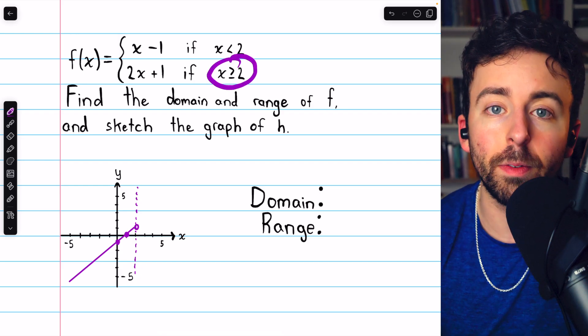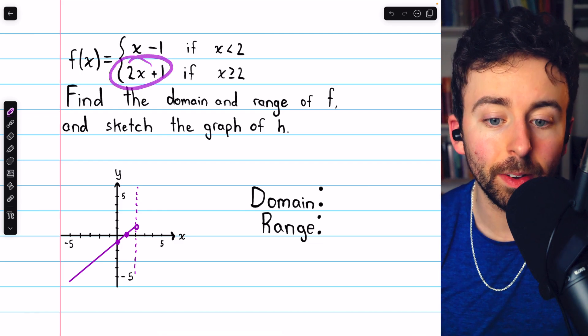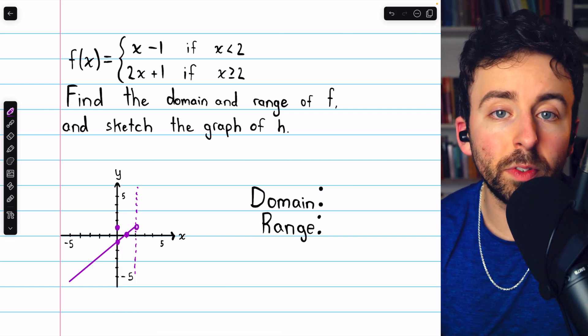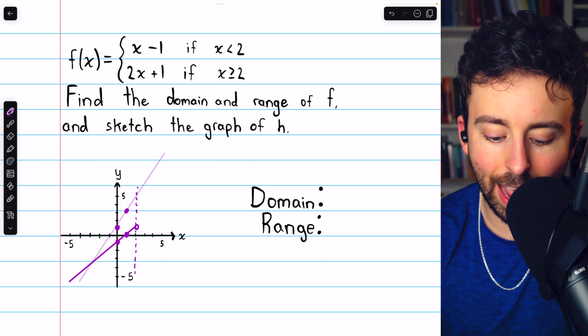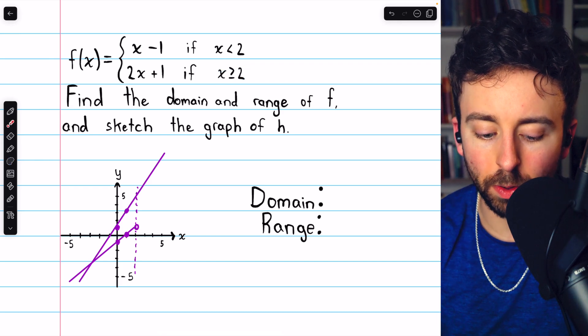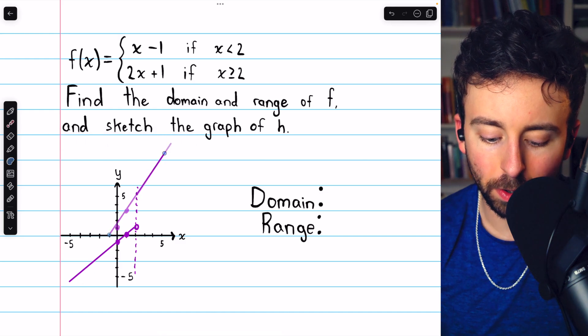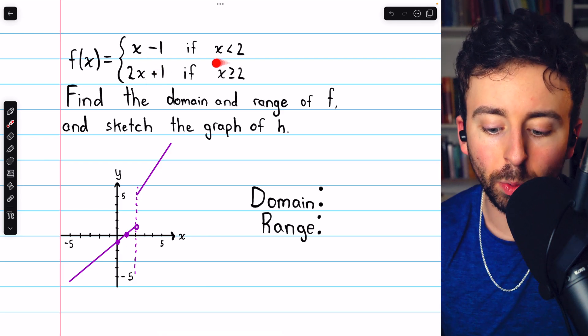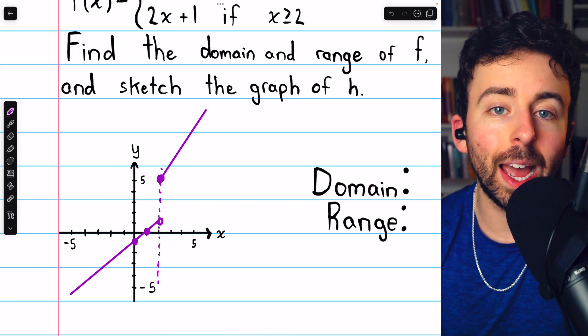Once we get to x equals 2 and past it, so x greater than or equal to 2, this is what the function looks like. 2x plus 1 is just another line. It has a y-intercept of 1 and a slope of 2. So if we go over 1, we would have to go up 2, something like that. But then again, we have to consider when this line actually applies. It only applies when x is greater than or equal to 2. So we have to make this line a little bit shorter. So something like that. And then because this line is actually how the function behaves when x equals 2, we should emphasize that with a closed circle at x equals 2.